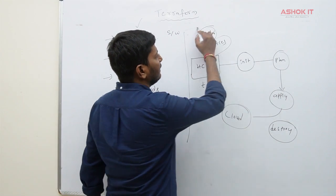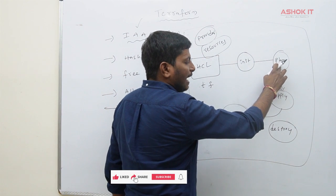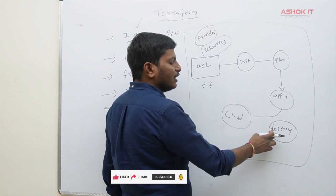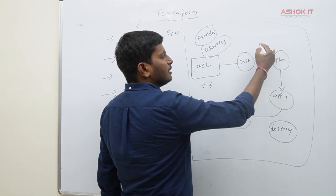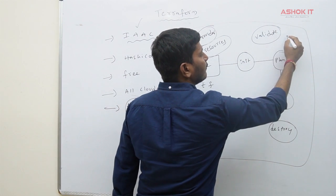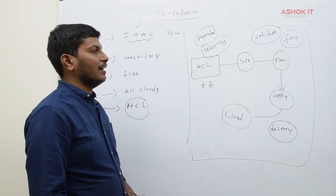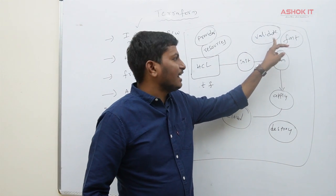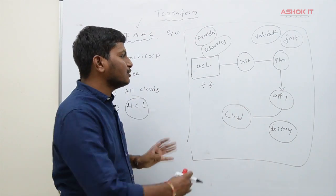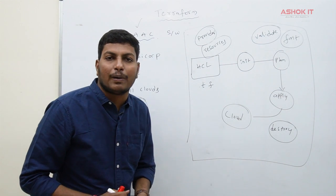This is the architecture of Terraform: prepare the script, initialize, plan, apply — infrastructure is created. To delete it, run destroy. Before running plan, you can validate the script using 'terraform validate', and format it using 'terraform fmt'. So the commands are: terraform init, terraform validate, terraform fmt, terraform plan, terraform apply, terraform destroy.